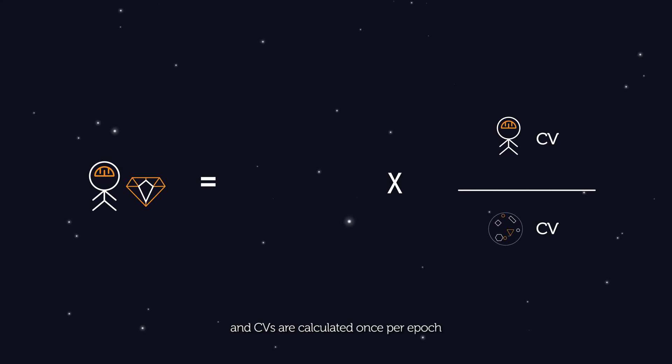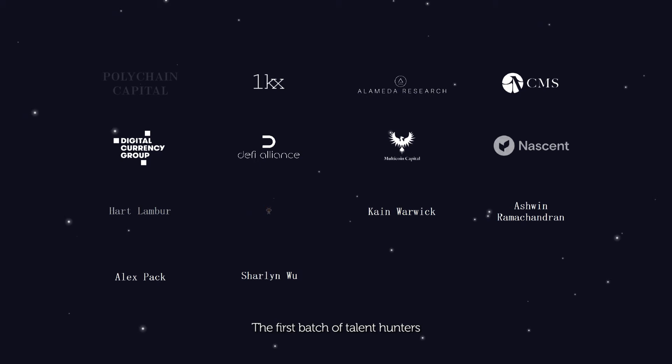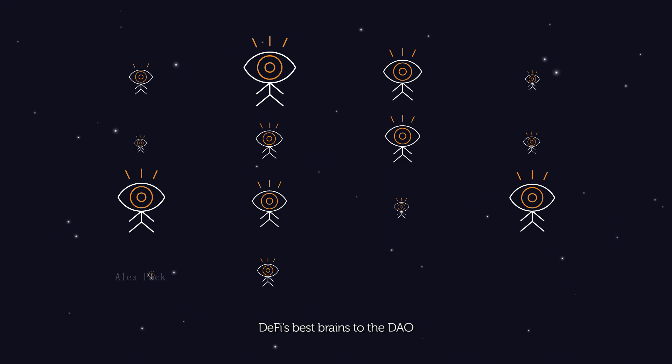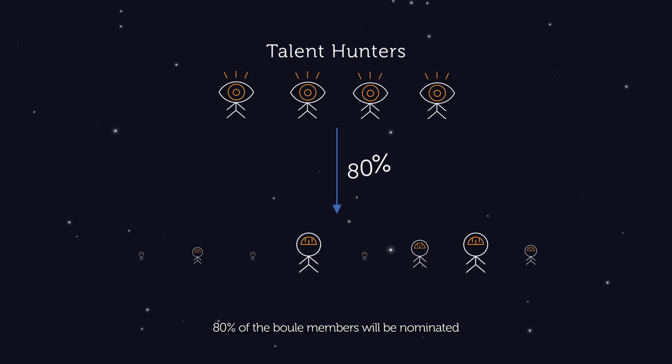Now, you may be wondering, how do we select BOOL members? The first batch of talent hunters are the initial supporters of Aladdin DAO. They are responsible for attracting DeFi's best brains to the DAO. When the BOOL launches, 80% of BOOL members will be nominated by the first batch of talent hunters, and the remaining 20% will be nominated directly by the community.